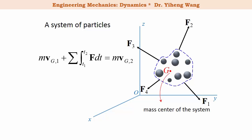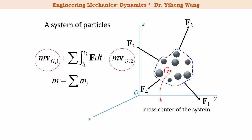The principle of linear impulse and momentum can also be applied to a system of particles. Here the total impulse term includes all the impulse caused by external forces acting on the system, and for the linear momentum term, m is the total mass of all the particles in the system, and vg is the velocity of the mass center of the system.